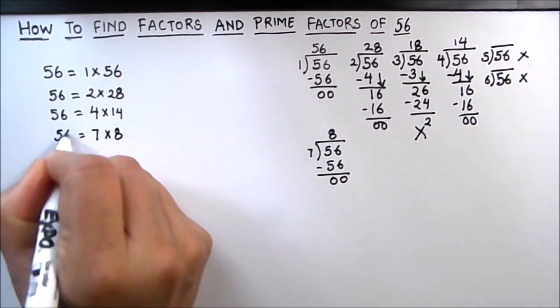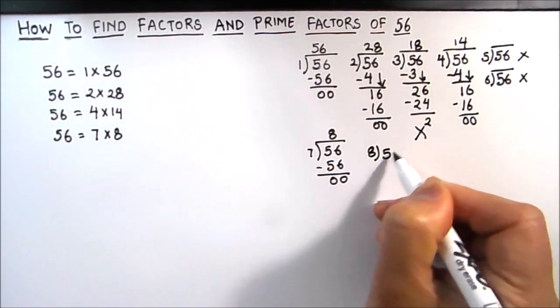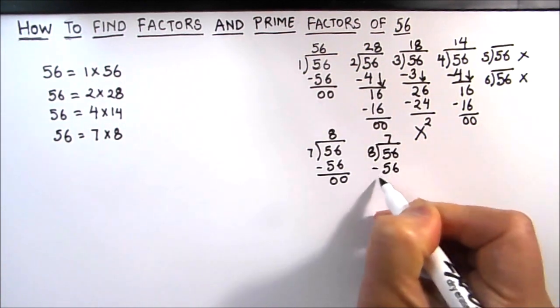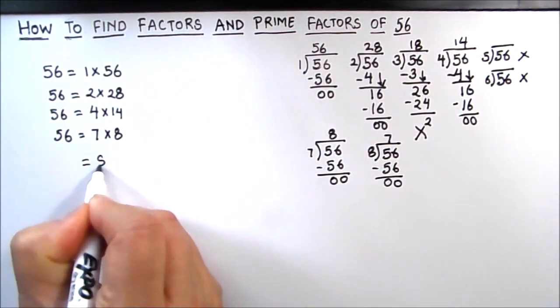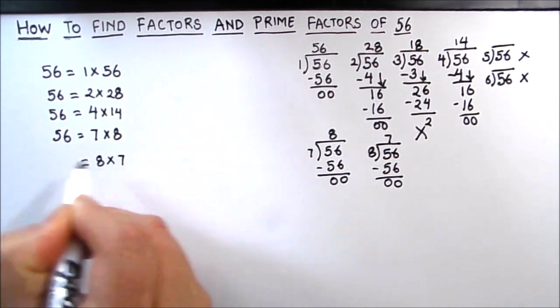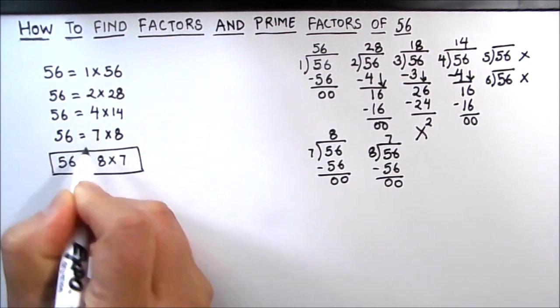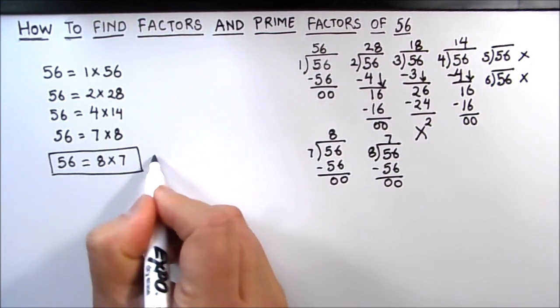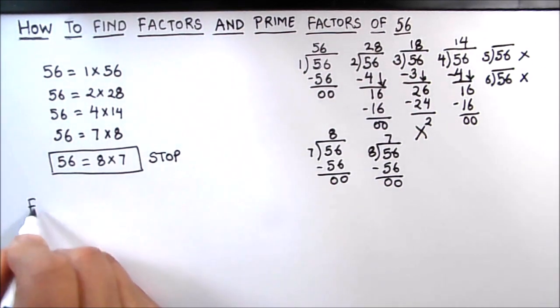Next we'll divide 56 by number 8, and 8 times 7 is 56. But here we see that the factors are getting repeated. We already got 7 and 8 as factors in our previous division, so we'll stop our division here.